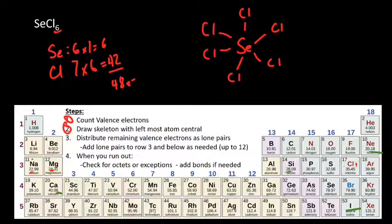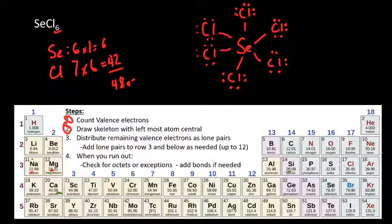Now, those six bonds give me 12 total electrons. And so now I'm going to distribute lone pairs. I continue adding lone pairs around each chlorine, working through all six chlorines until all 48 electrons are distributed. That was a lot of lone pairs. We've distributed them.